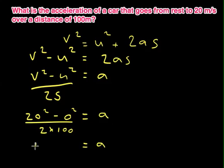So 20 squared is 400. 0 squared is obviously 0. 2 times 100 is 200. So 400 divided by 200 gives an answer of 2.